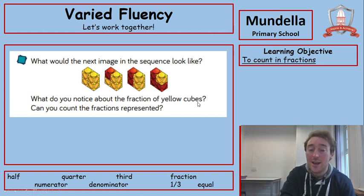What do you notice about the fraction of yellow cubes then? Well, we are actually, we're getting less of them so the fraction is getting smaller. We've gone from four over four to three over four to two over four to one over four. And then if we have the next image, then we've got zero over four.